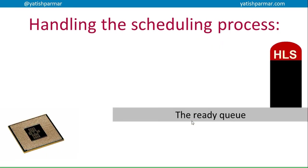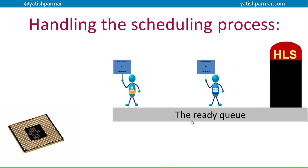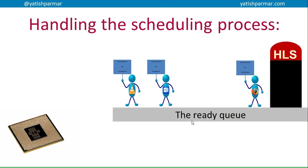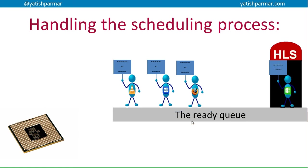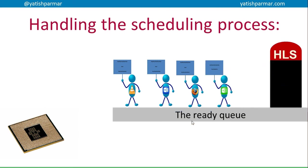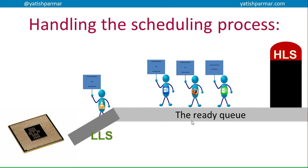So how is the actual scheduling process handled? There are different parts to the scheduler. The high level scheduler is responsible for maintaining the ready queue - as tasks arrive, it determines whether there's space for them and then moves them into the ready queue. When the CPU has finished its current process, the low level scheduler takes a task and moves it into the CPU, which then processes that particular task.